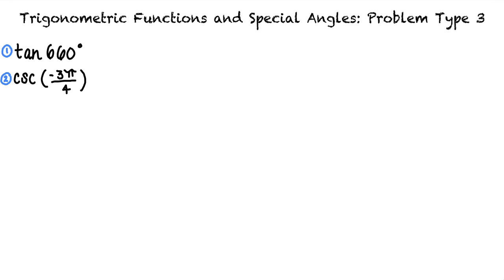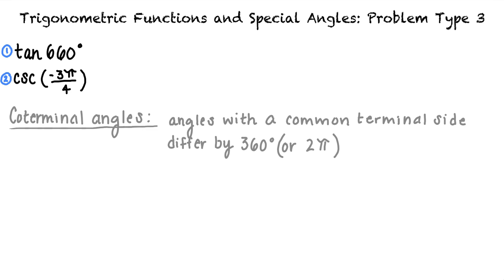What is a coterminal angle? Coterminal angles are angles that have a common terminal side. Two angles are coterminal if they differ by a multiple of 360 degrees or 2 pi. We can use this knowledge to help us find a coterminal angle of 660 degrees.